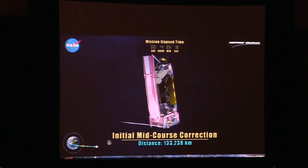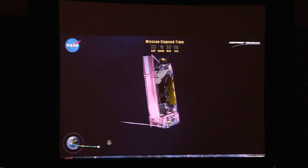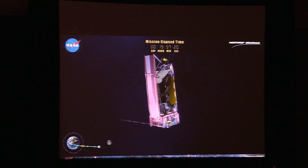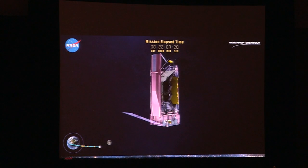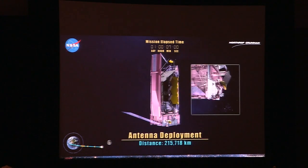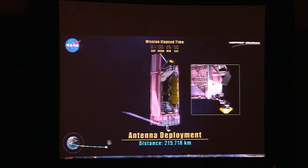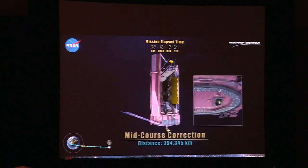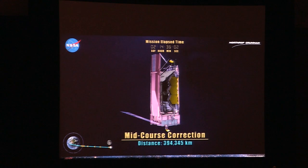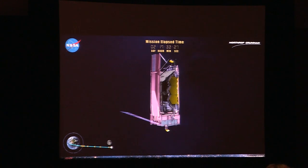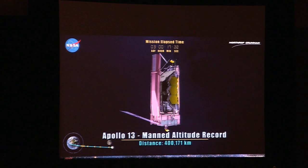After MCC-1A, we deploy our communications antenna so we can start talking to the Earth. At that point we're already pretty much at the distance of the moon. All of our major deployments occur once we're past the moon — we're on our way into deep space to L2.